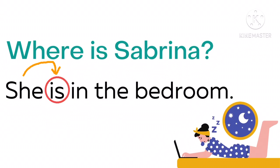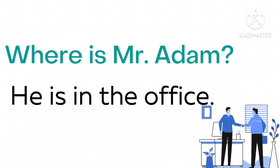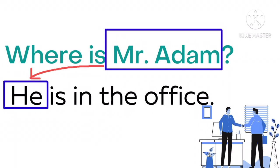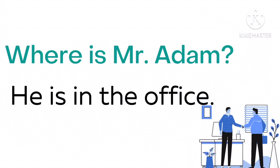Next, selanjutnya. Where is Mr. Adam? Di mana Tuan Adam? He is in the office — dia ada di dalam kantor. Mr. Adam itu pria, jadi bisa digantikan dengan subjek he. Oleh sebab itu, pada jawaban, kita harus mulai dengan subjek he. Dan setelah subjek he, kita meletakkan to be is.